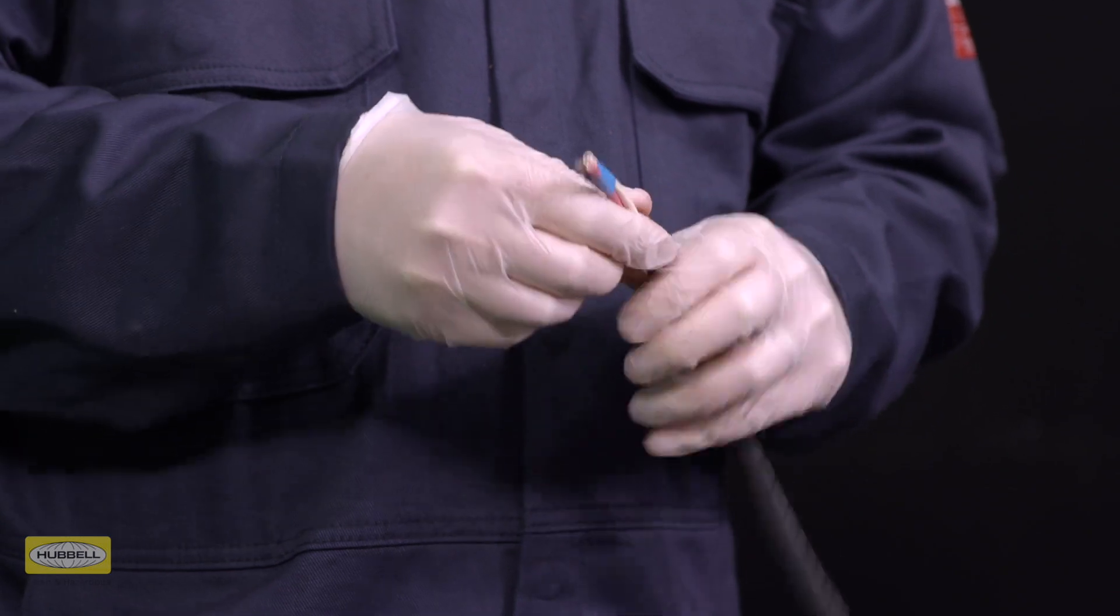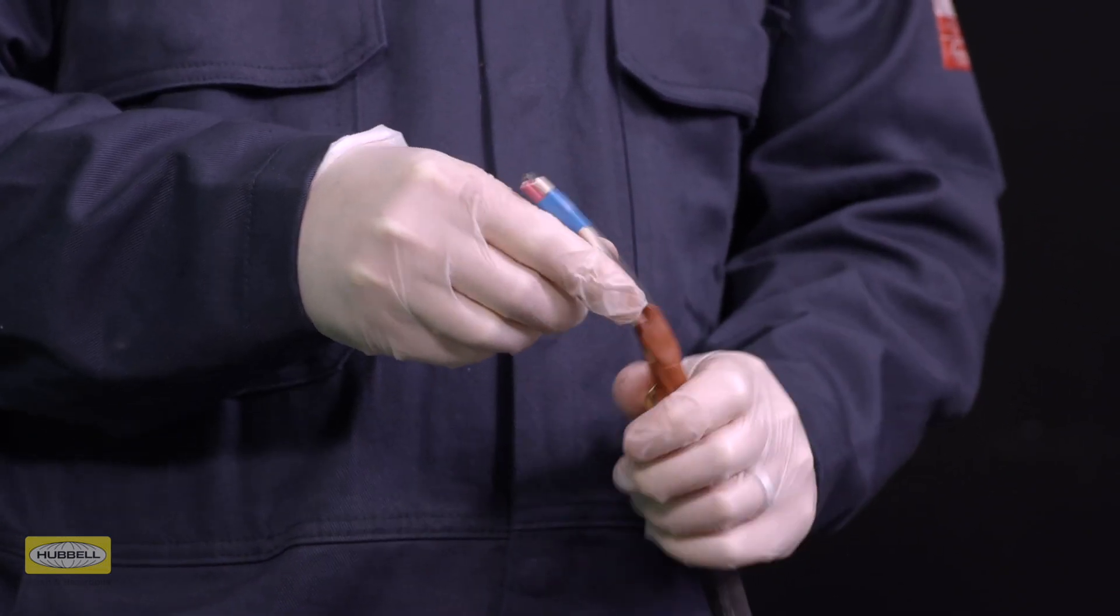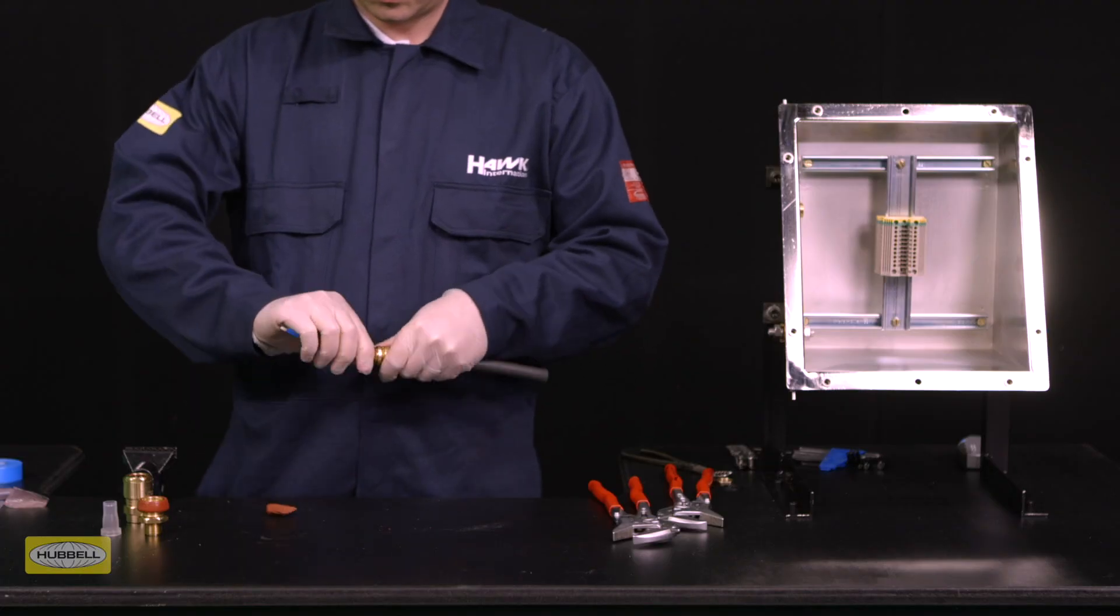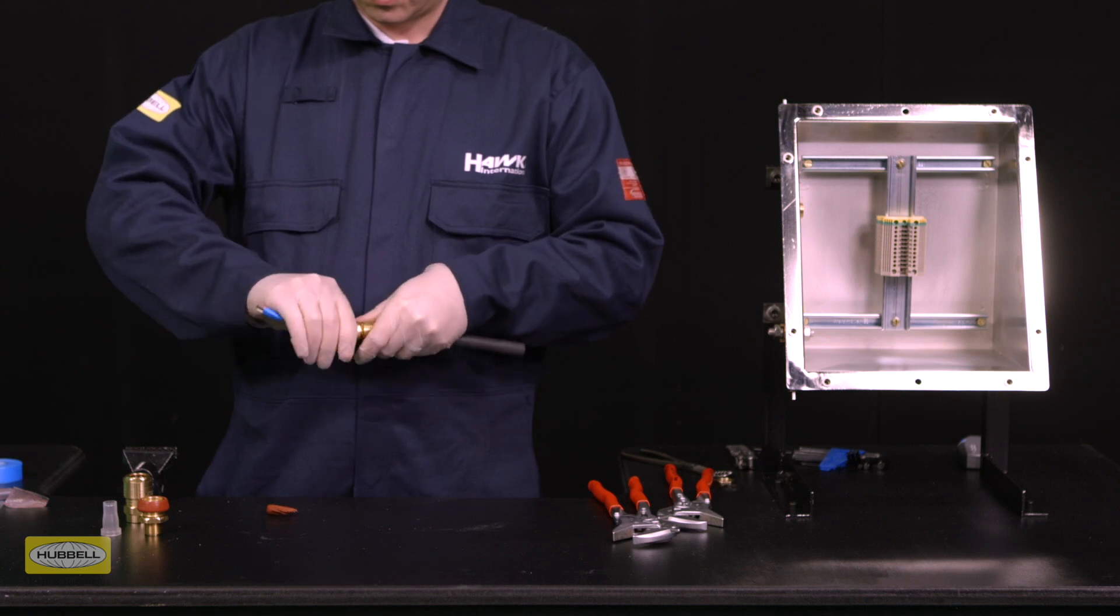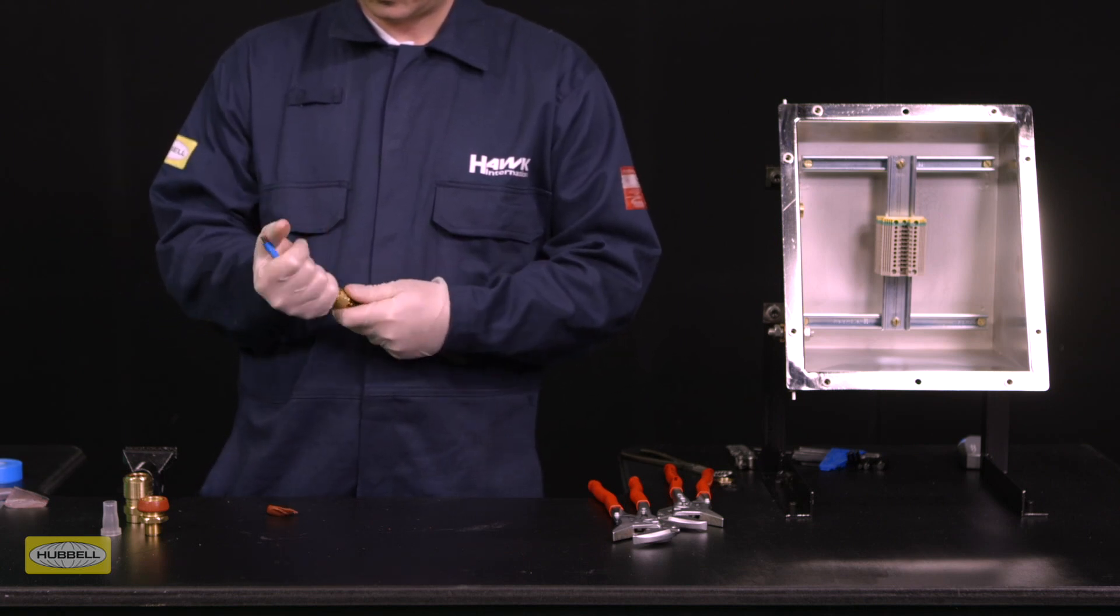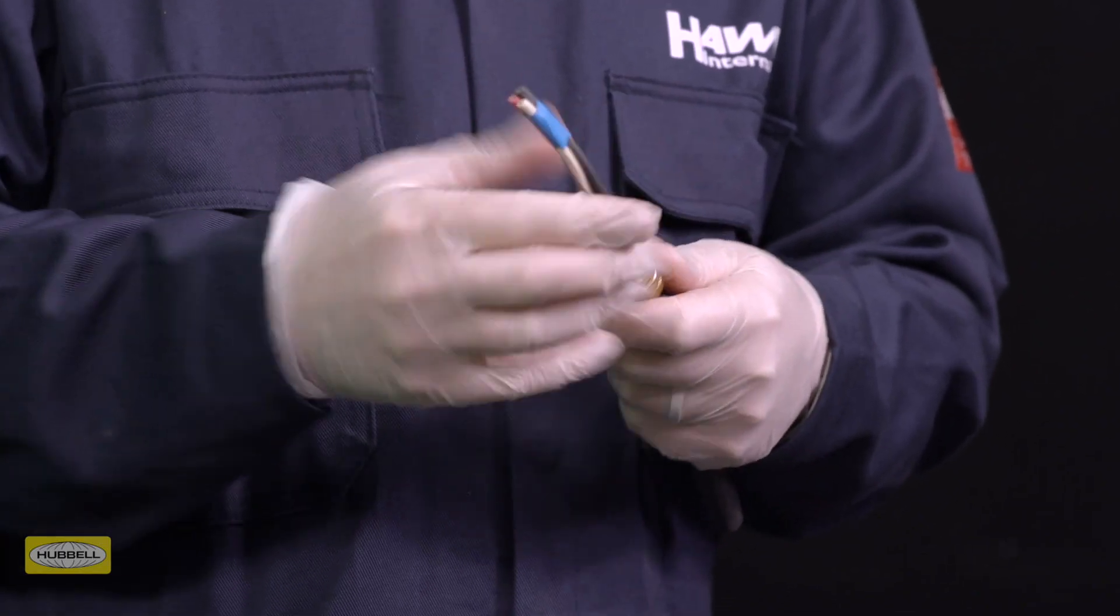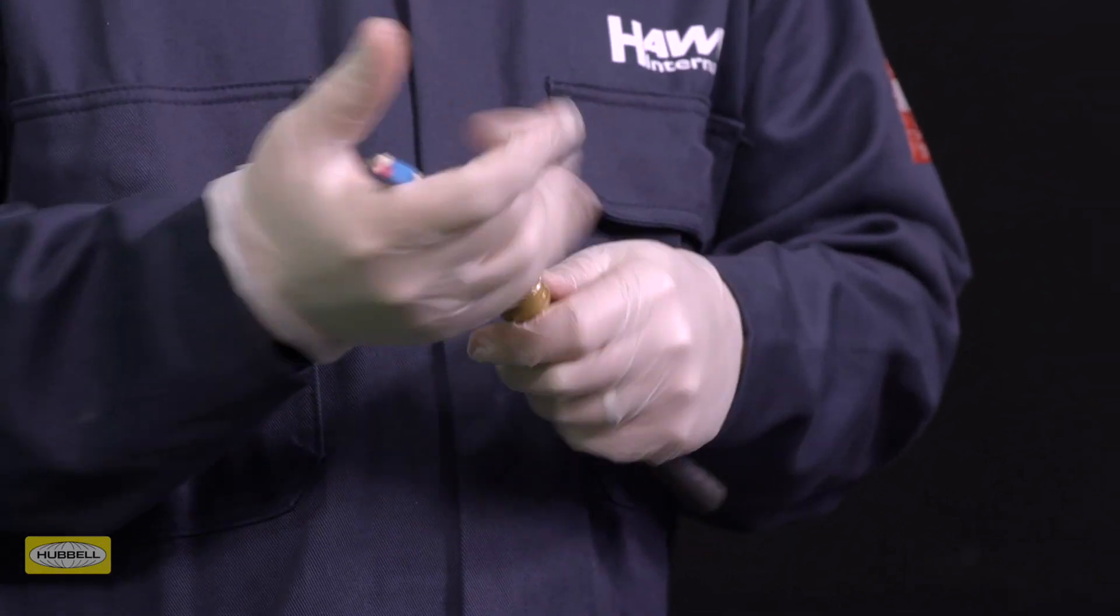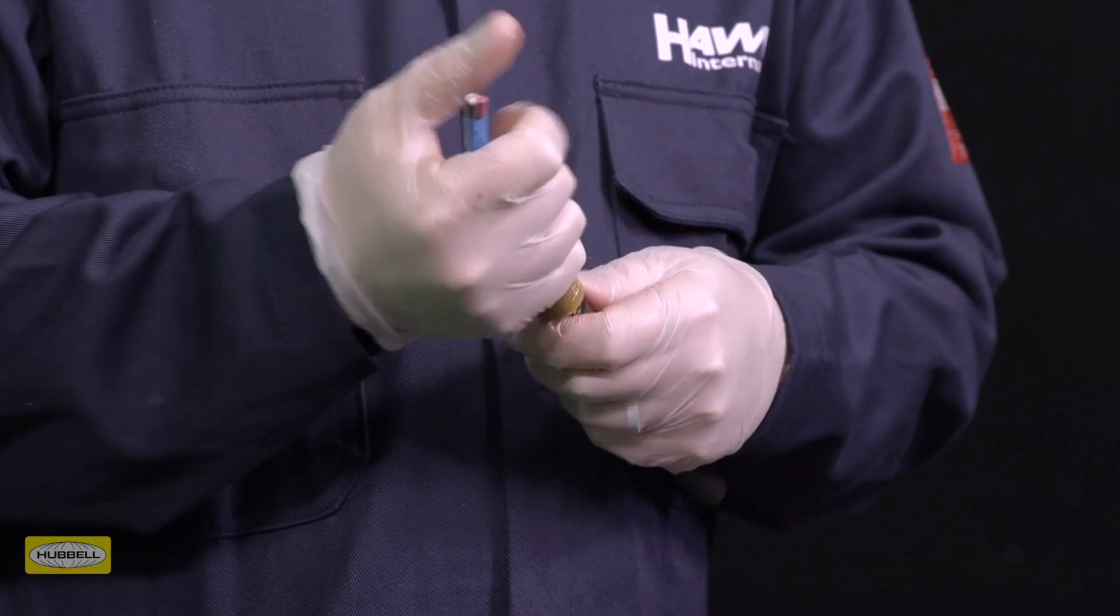Pack more compound around the outside of the conductors. Shape the compound using the palm of your hand. The compound should form a cone shape to aid installation and reduce the risk of voids during pot installation.